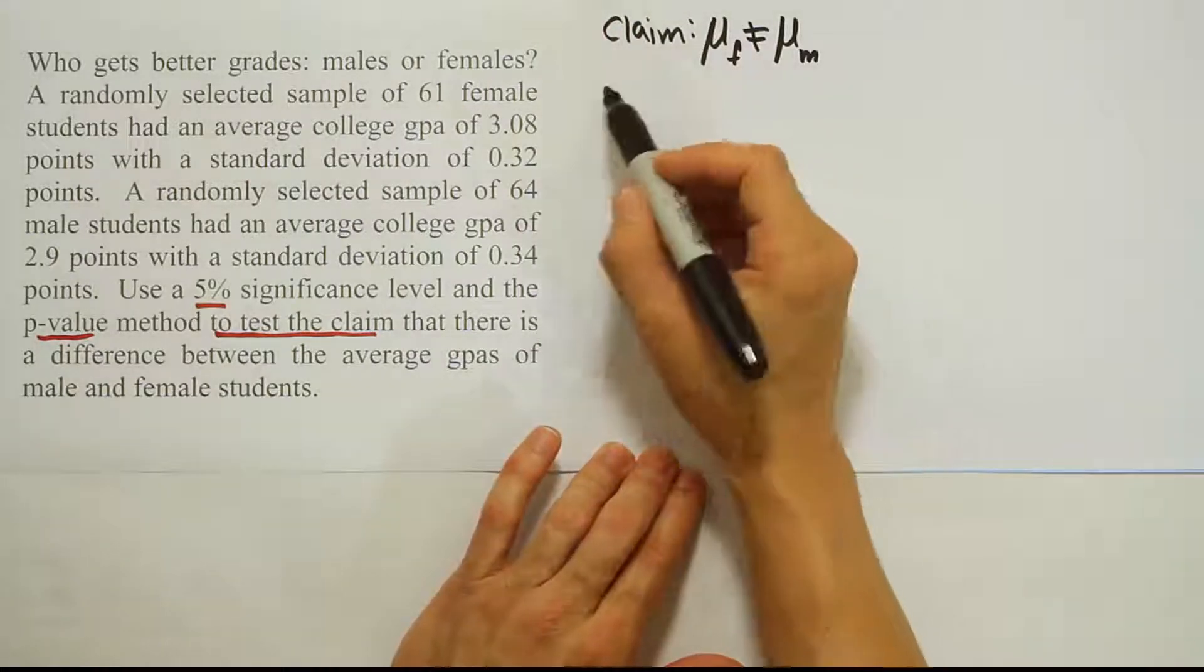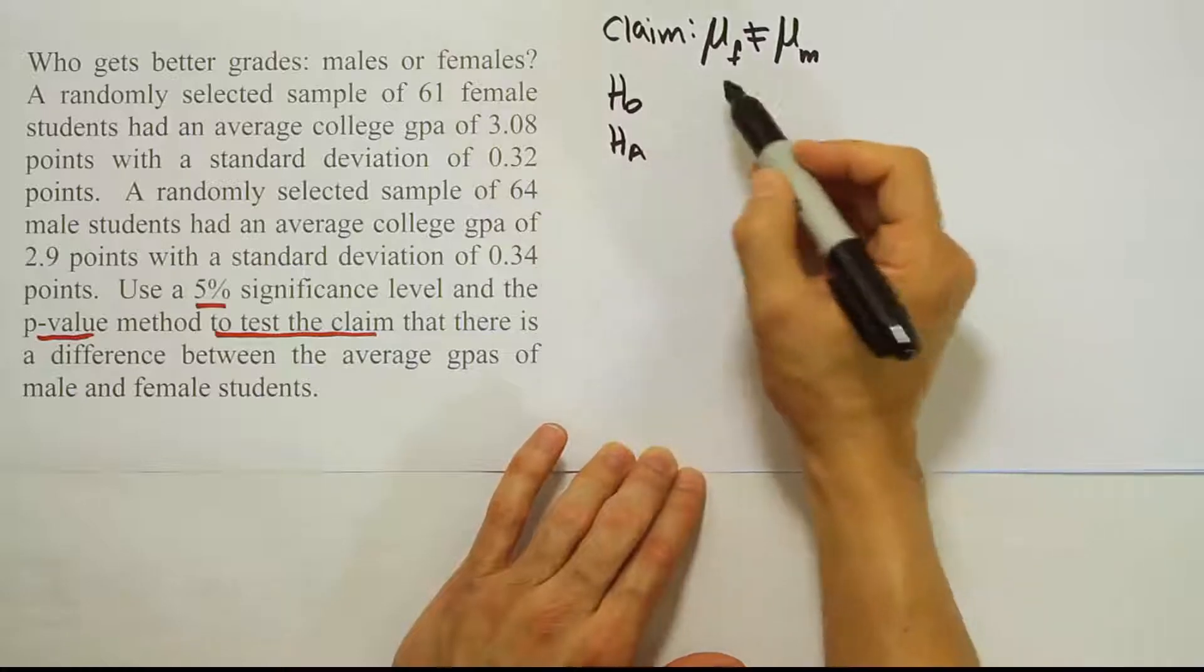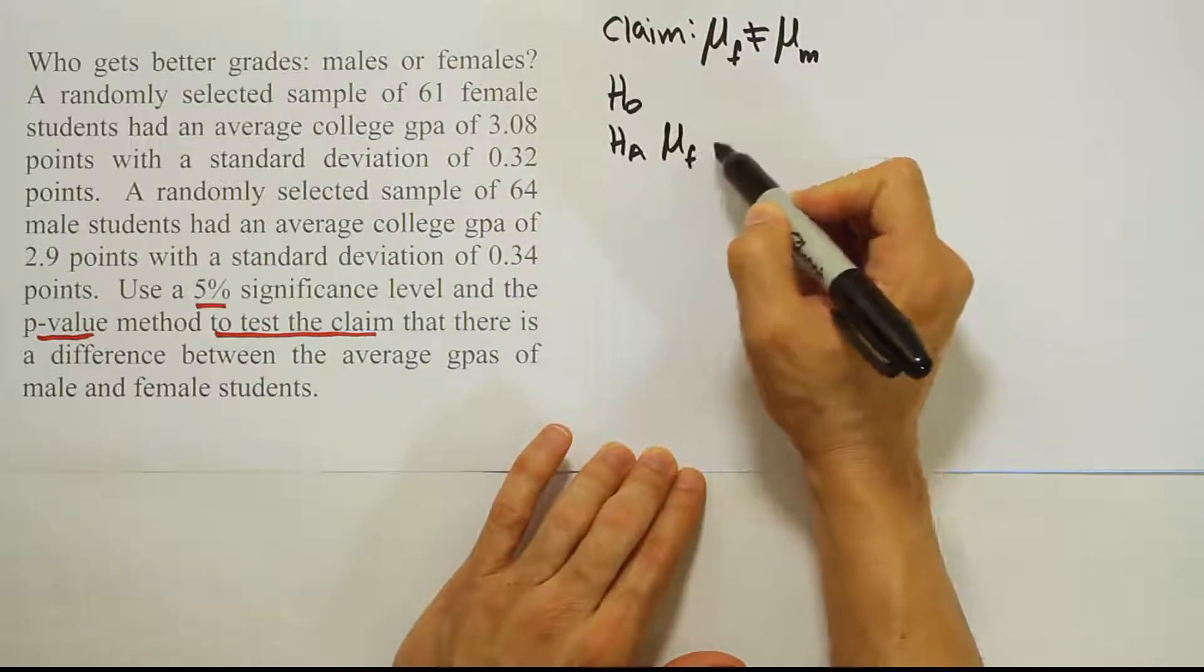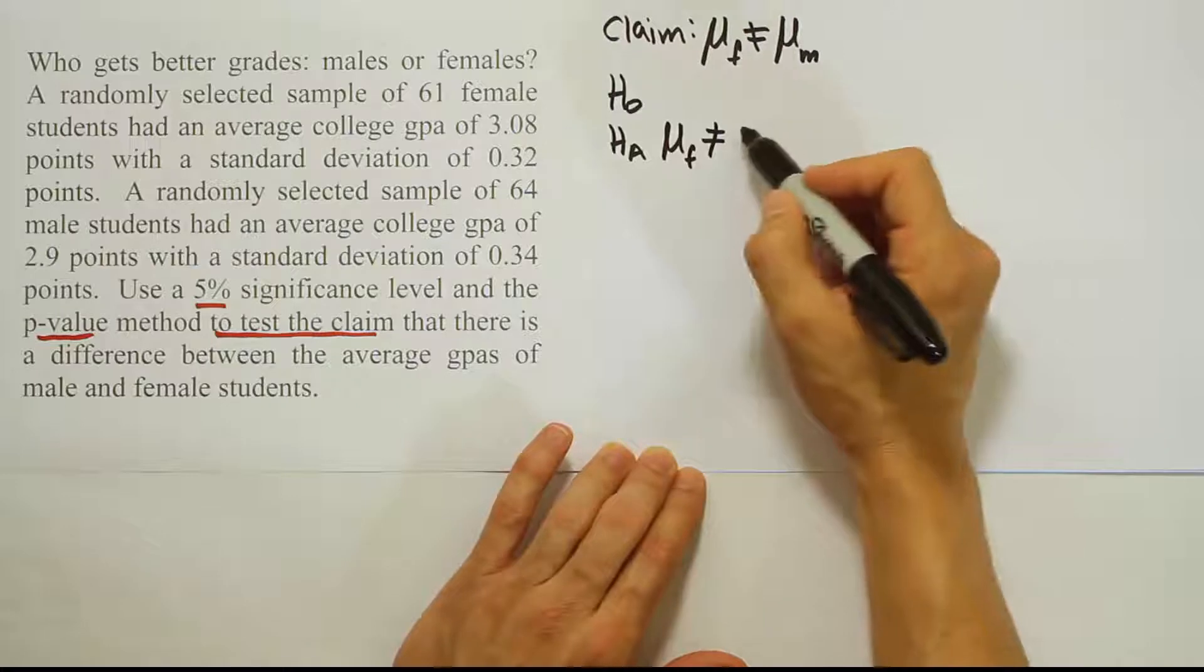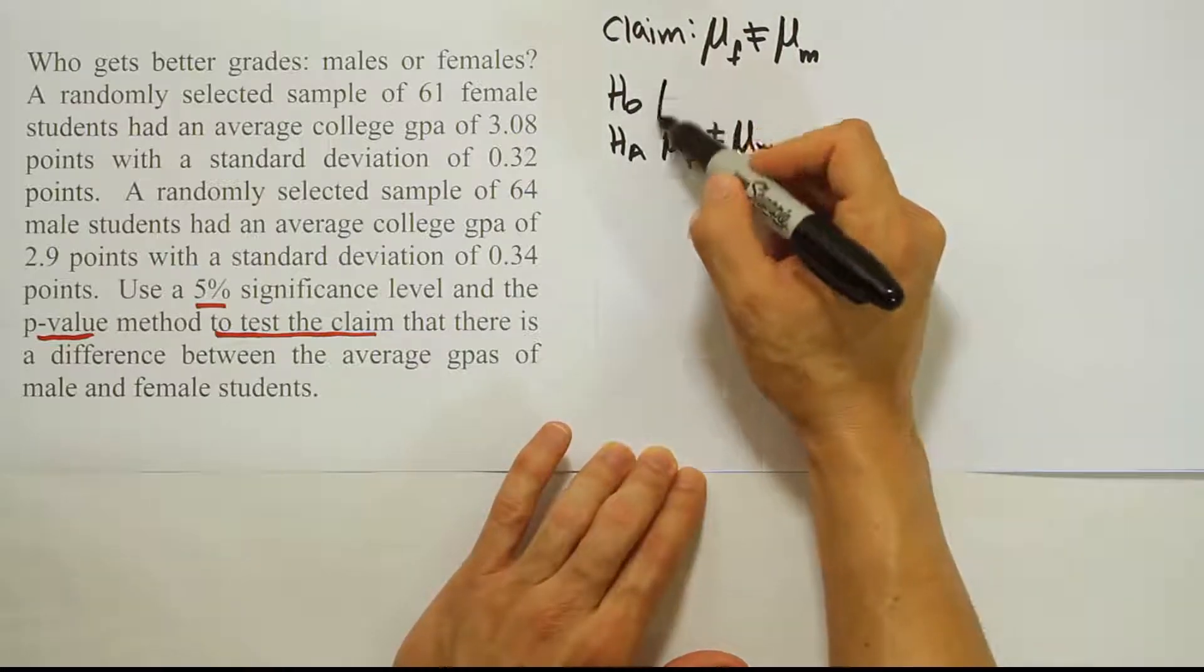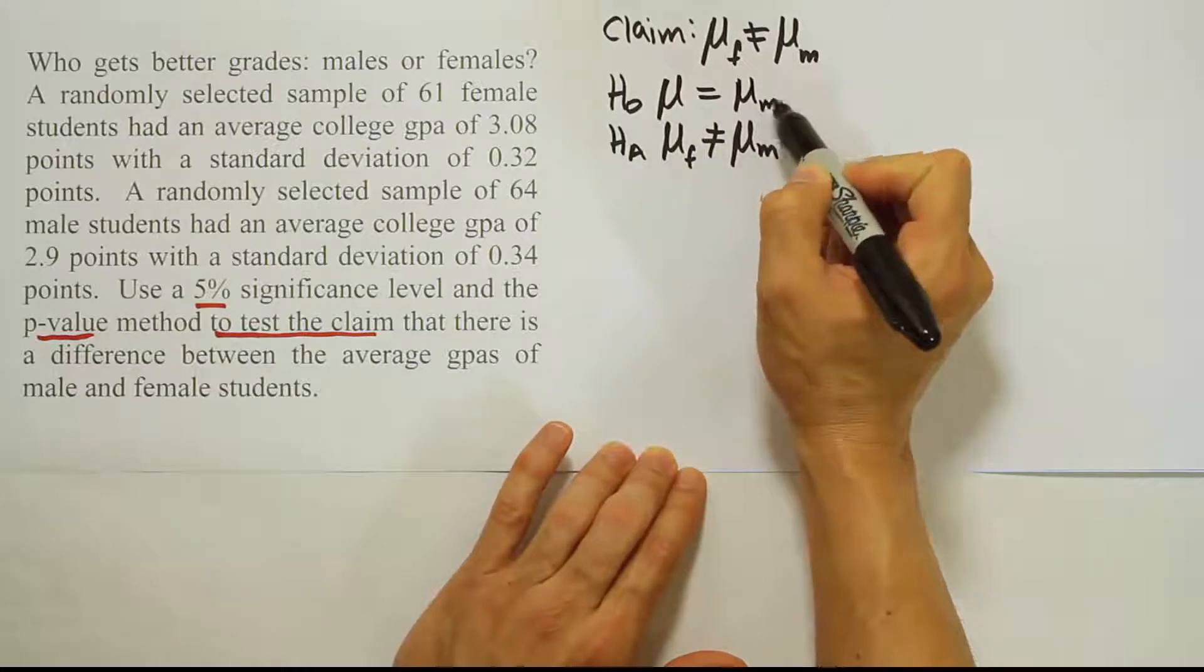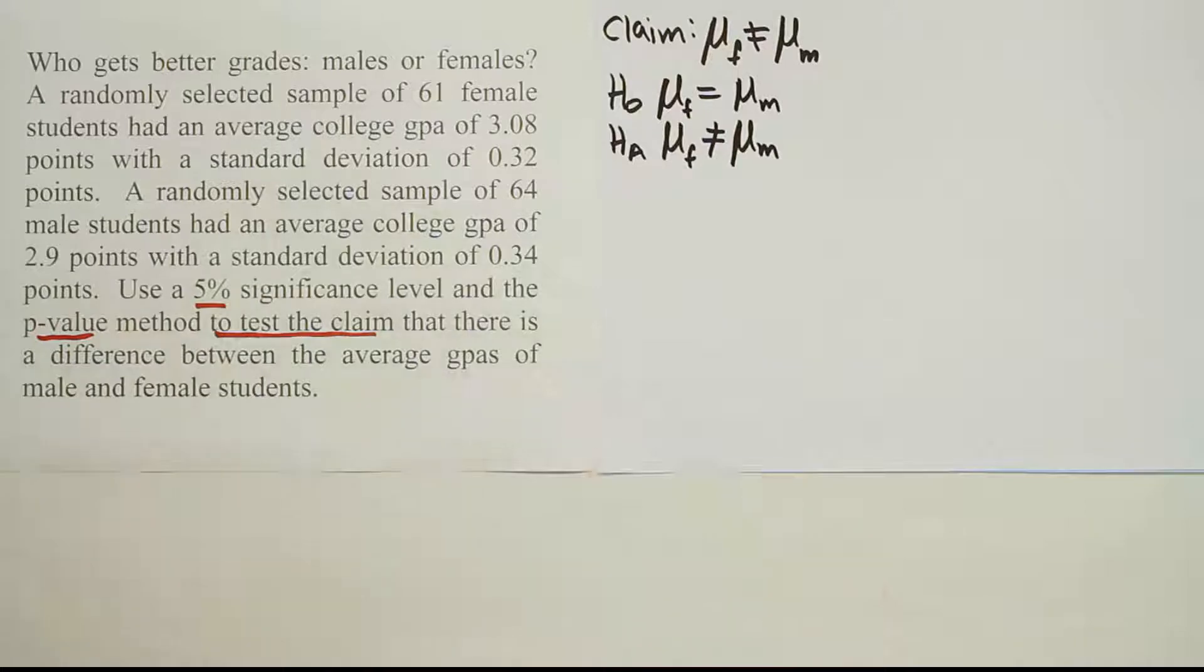Now if that's not equal to, that means that's the same as HA. So the next step where we come up with H0 and HA, in this problem the claim and HA will be the same. So the mean for females is not equal to the mean for males. That's your HA. The opposite of that is then equal to. So that'll be our H0. The mean for females is equal to the mean for males.